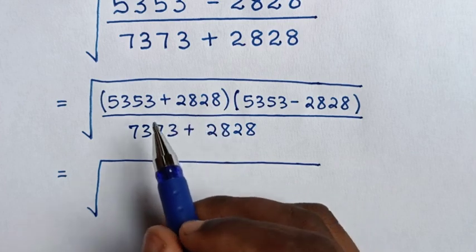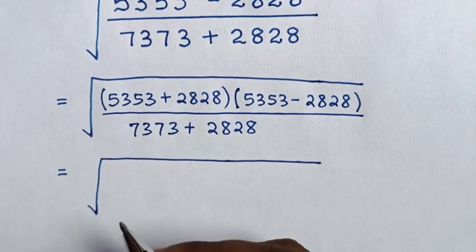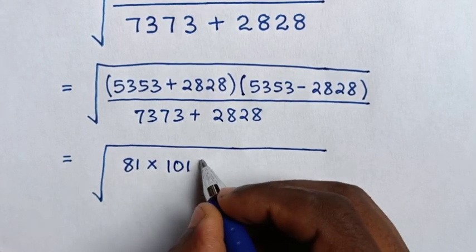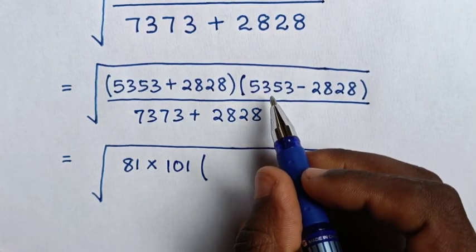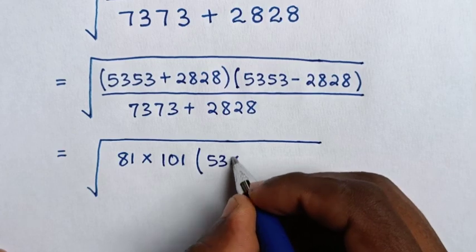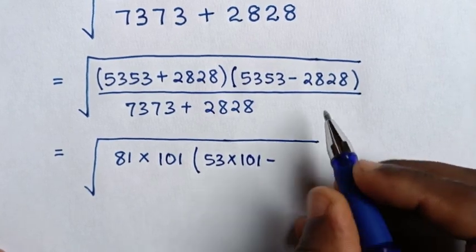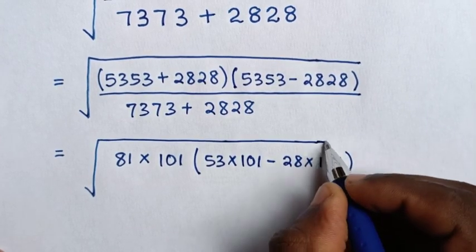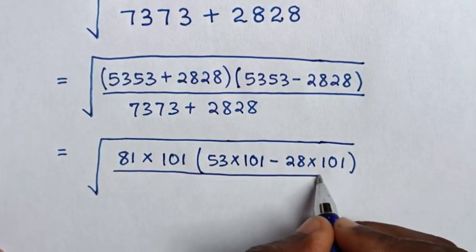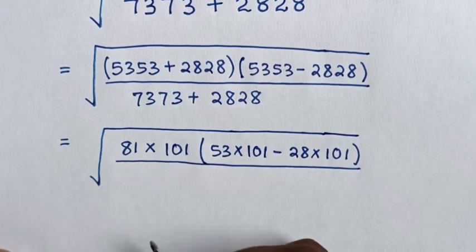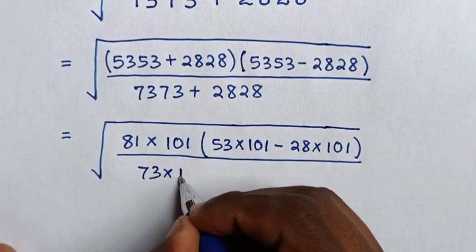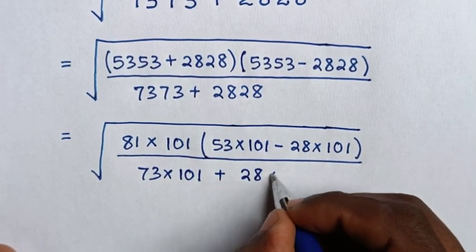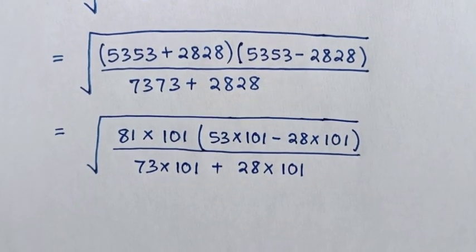It will be equal to square root of: 5353 plus 2828 is 8181, and 8181 is the same as 81 times 101. Then 5353 is the same as 53 times 101, minus 2828 which is the same as 28 times 101. In the denominator, 7373 is the same as 73 times 101, plus 2828 which is the same as 28 times 101, giving 8181 — also 81 times 101.